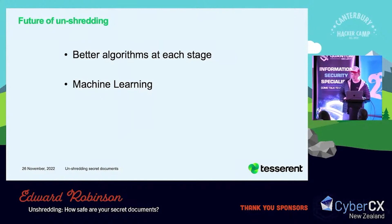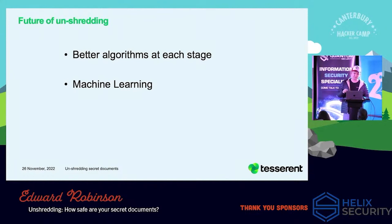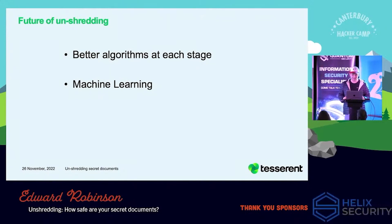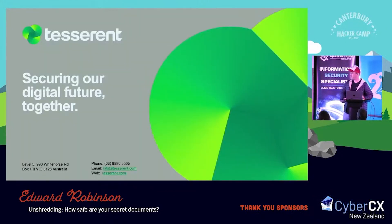So, what's the future of unshredding? Since the DARPA challenge, the focus has generally been on improvement of algorithms at each stage of the process, such as using optical character recognition to aid reconstruction. In the past 10 years, there have been a large number of papers published, each building on the previous ones to improve this process. I was pleasantly surprised to see that in January of this year, a paper was published that uses machine learning to dramatically speed up the reconstruction process. Unshredding is still an active area of research, and I've seen research from Brazil, Greece, UK, and China being published publicly. Thank you very much for your time.